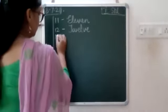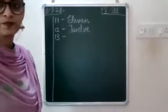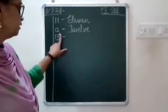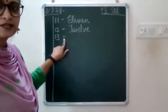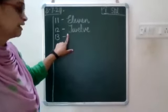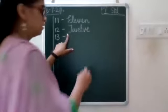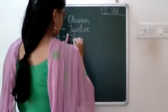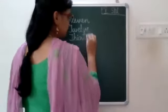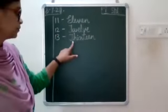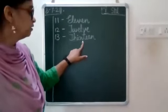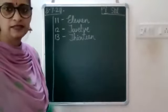Now again leave a line, write 13. Leave a finger space, put a small dash, leave a finger space, then again leave one finger space, write capital T-H-I-R-T-E-E-N, 13.